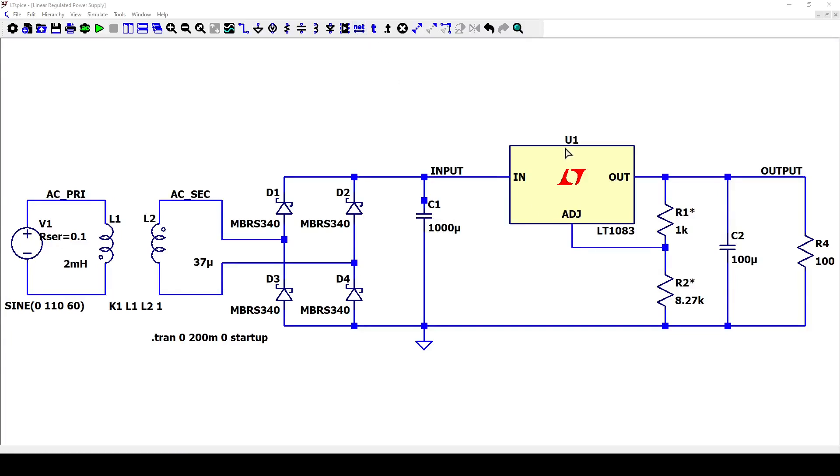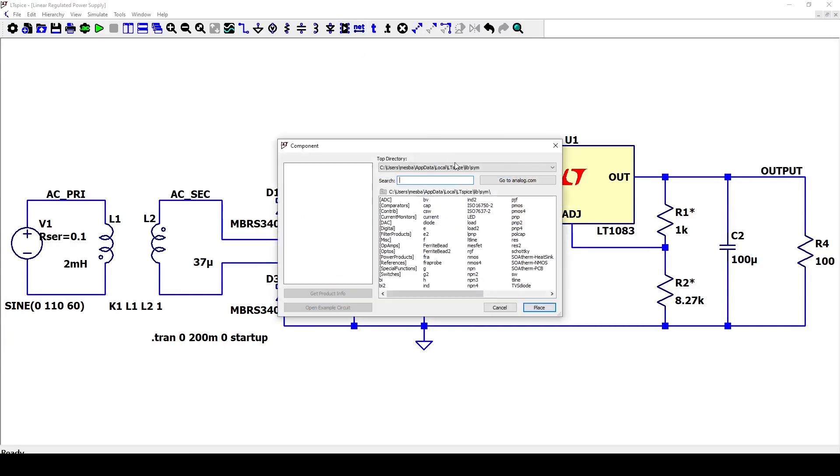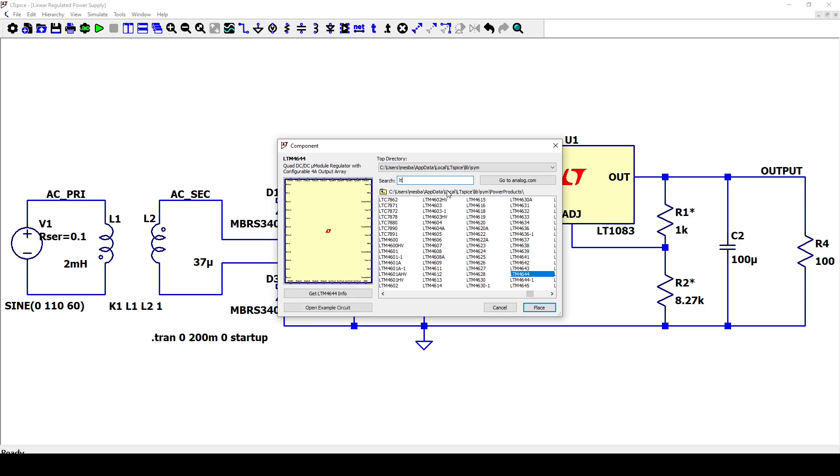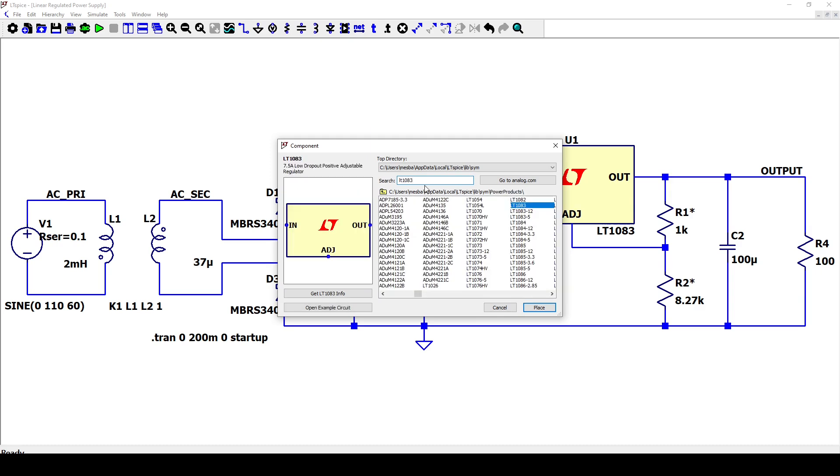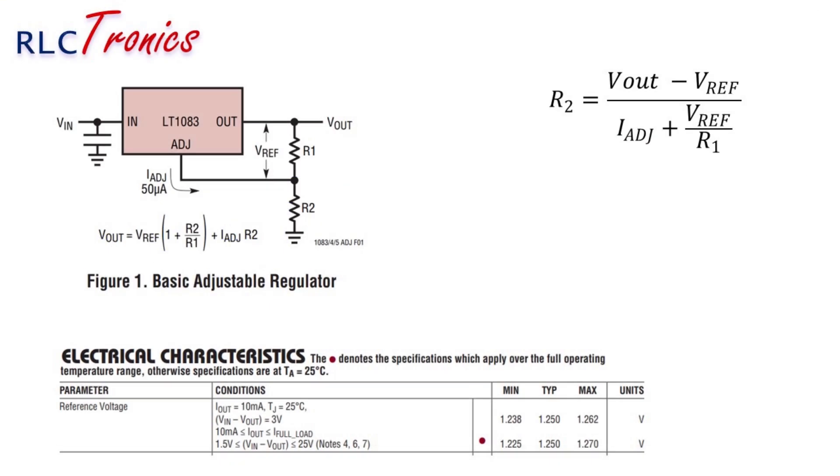For the voltage regulator, let's take the LT1083 that is already in the library. The ADJ pin allows you to select the output voltage, in our case we need 12 volts. The selection is done by the use of two resistors that need to be calculated according to the instructions of the datasheet.